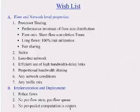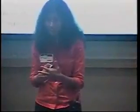The wish list is divided into two broad categories: flow and network level properties, and properties related to implementation and deployment. First, we would ideally like to emulate processor sharing at the bottleneck link — sharing bandwidth efficiently and fairly amongst flows. Processor sharing has desirable characteristics: flow completion times are invariant of the flow size distribution, its mean flow completion time comes close to the minimum achievable, and flows complete an order of magnitude faster than with today's TCP.